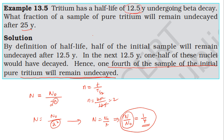After the first 12.5 years, half the particles decay. After the next 12.5 years — the second half-life — half of the remaining particles decay again, leaving one fourth. So the fraction of undecayed particles remaining after 25 years is 1/4.